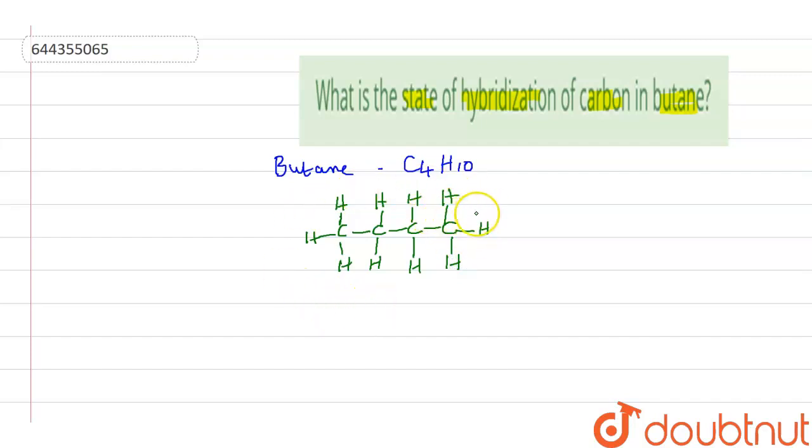Now, we have to find out the hybridization of the carbon which is present over here. So, to calculate the hybridization, we need to know the total number of sigma bonds. This you have to calculate. There are so many bonds. After calculating the total number of sigma bonds, you should know what is that state of hybridization.